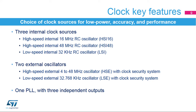The RCC offers a large choice of clock sources, which can be selected depending on the low power, accuracy, and performance requirements. STM32G4 devices embed three internal clock sources: a high-speed internal 16 MHz RC oscillator (HSI16), a high-speed internal 48 MHz oscillator (HSI48), and a low-speed internal 32 kHz RC oscillator (LSI).